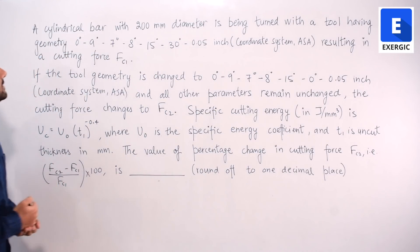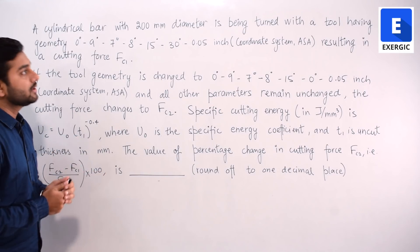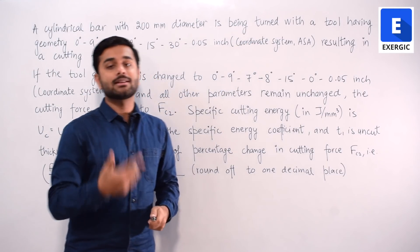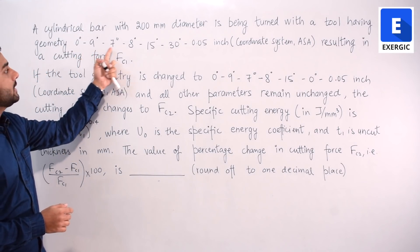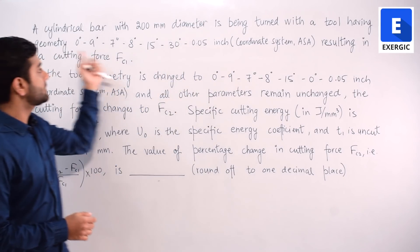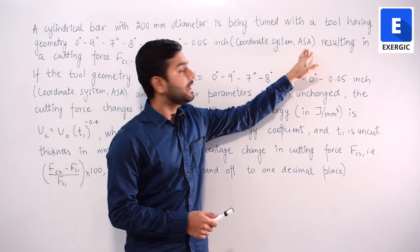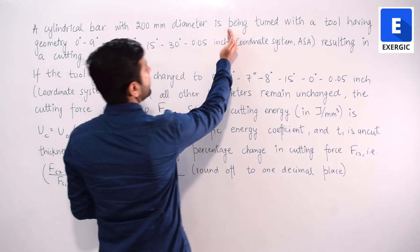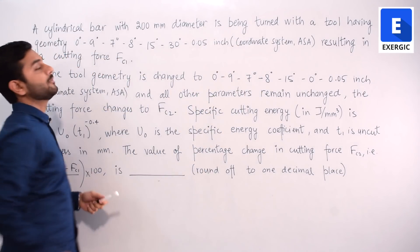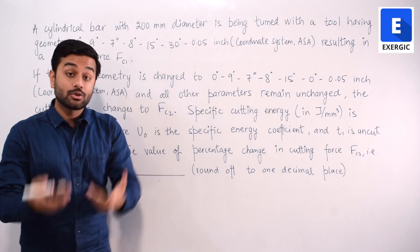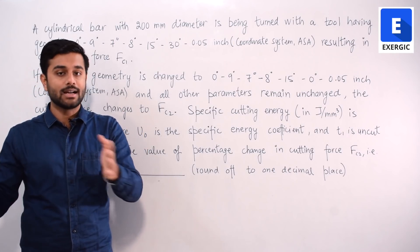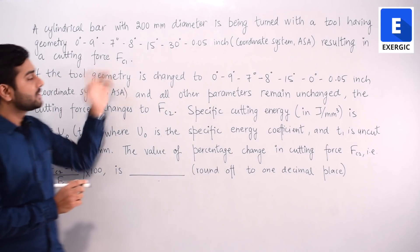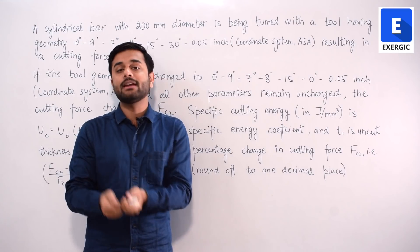The question says a cylindrical bar with 200 mm diameter is being turned — meaning a turning operation is happening on a lathe — with a tool having geometry: 0°, 9°, 7°, 8°, 15°, 30°, and 0.05 inch. This designation is given in ASA coordinate system. When you use this tool a cutting force FC1 is applied.